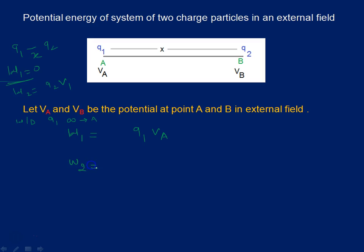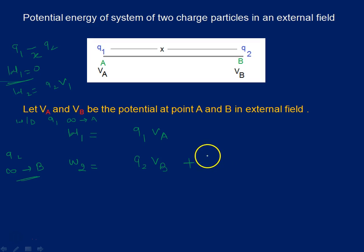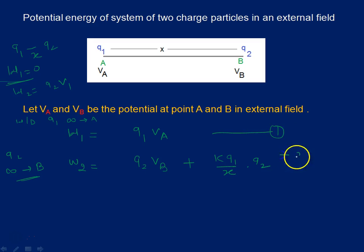Now calculate the work done in bringing Q1 from infinity to point A. You cannot say zero because the electric field is there, so you say Q1 into potential of that point. Similarly, calculate the work done in bringing Q2 from infinity to point B. If Q1 was not present, it would be Q2 into VB, but Q1 is also present, so you add the potential due to Q1, that is KQ1 by x into Q2. You sum up both equations to get the final result.